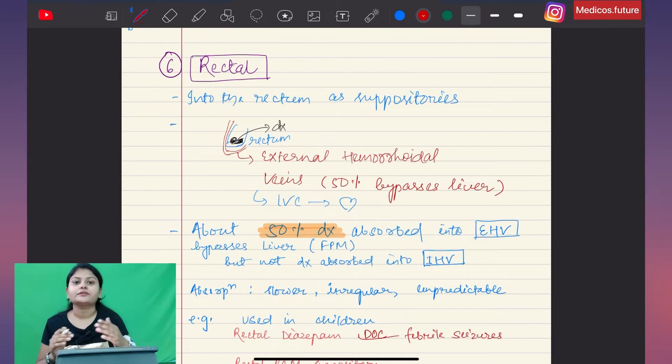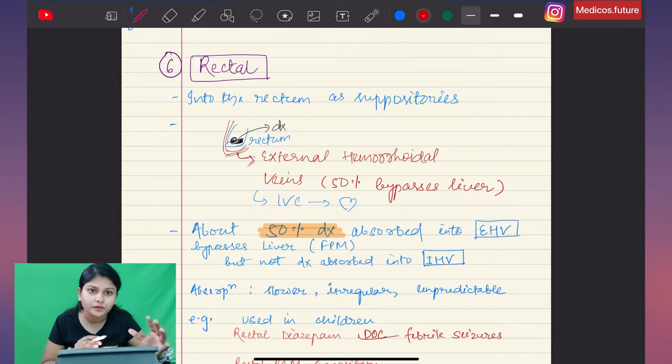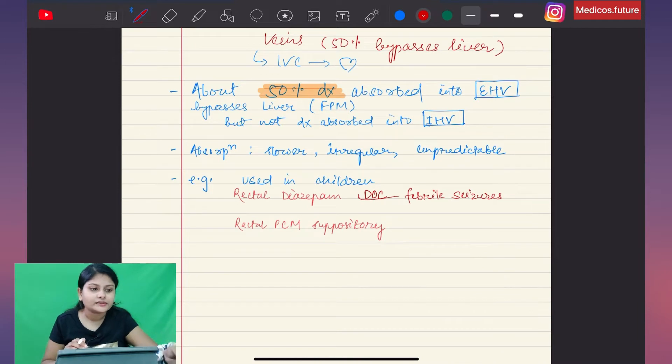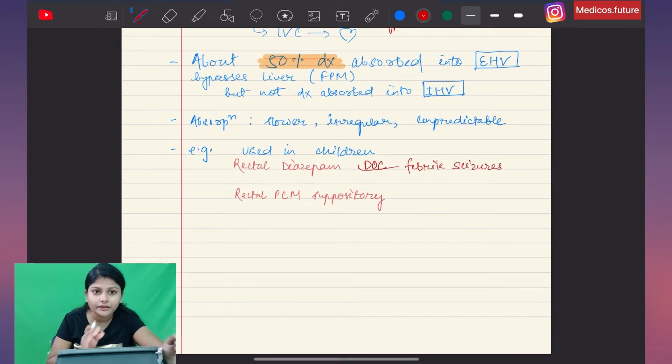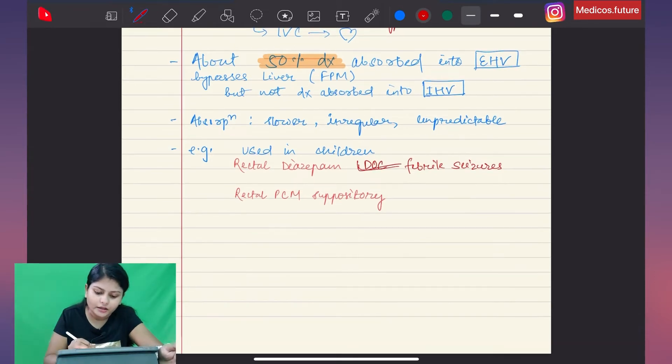The rectal route uses suppositories placed in the rectum. The drug is absorbed by external hemorrhoidal veins, and 50% bypasses the liver. Absorption is slower, more irregular, and unpredictable. This is important for children - we use rectal diazepam for febrile seizures, which is the drug of choice.